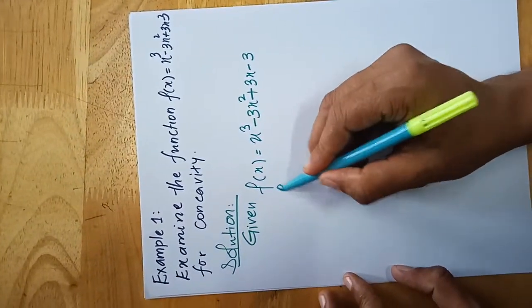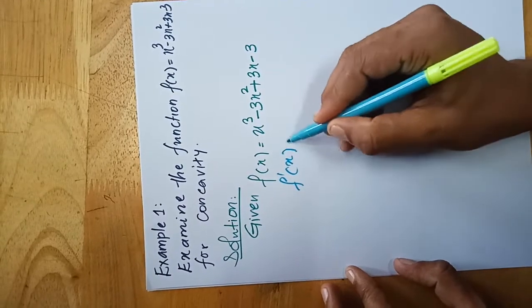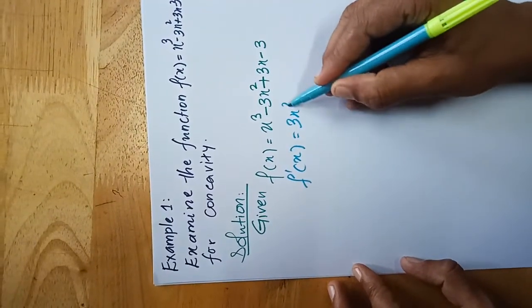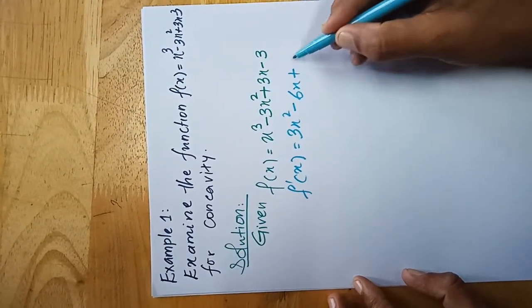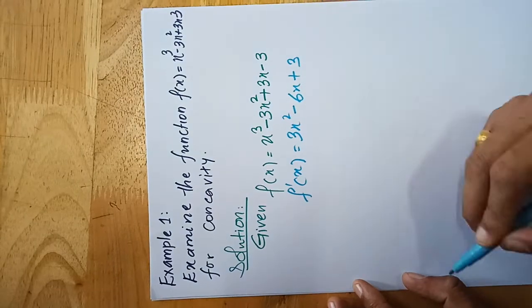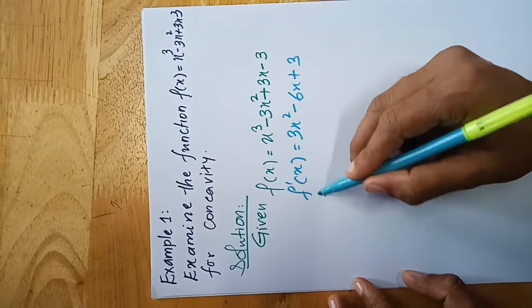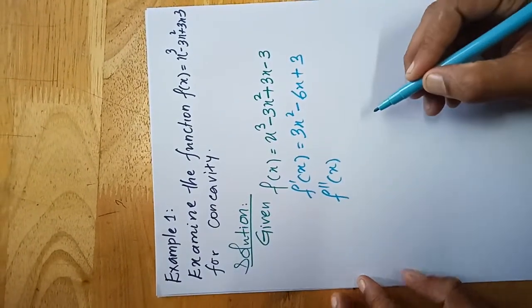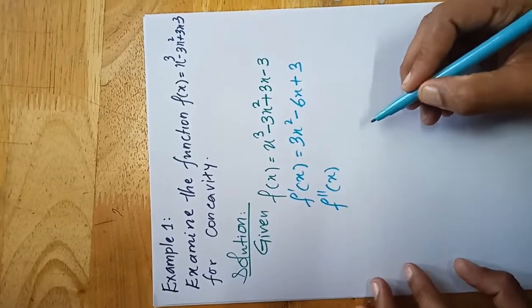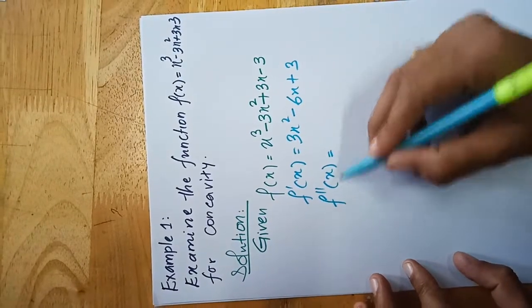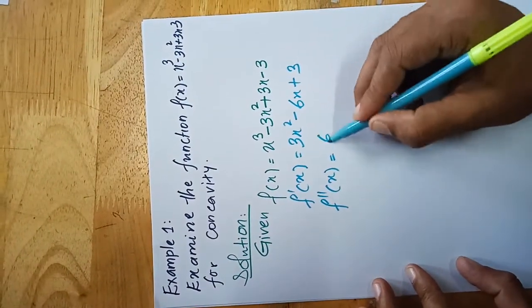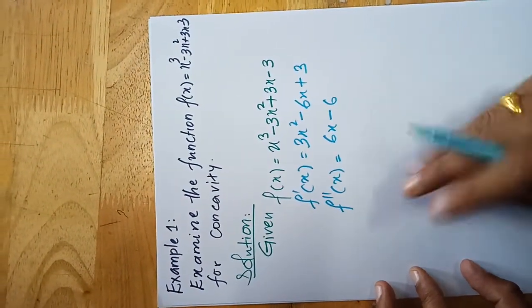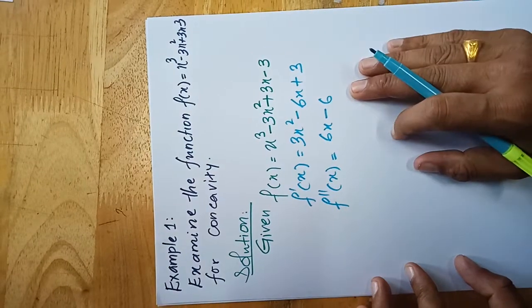Step one: find f'(x) = 3x² − 6x + 3. Step two: differentiate again to get f''(x) = 6x − 6.